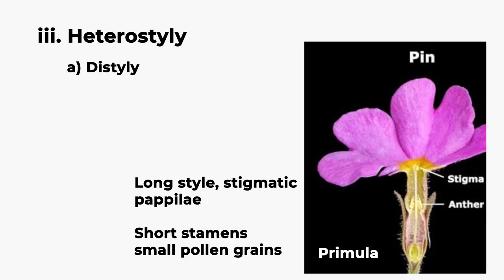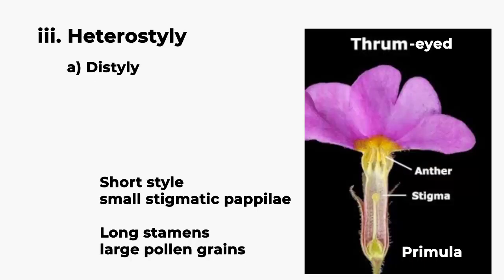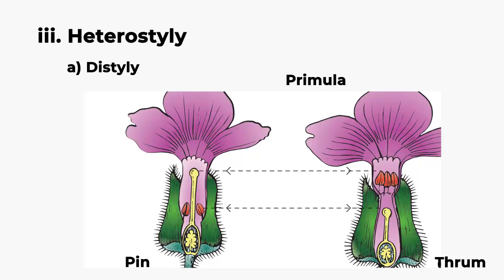One form is pin or long style — with long stigmatic papillae, short stamens, and small pollen grains. Another form is thrumite or short style — with small stigmatic papillae, long stamens, and large pollen grains. In these flowers, the stigma of the thrumite flower and the anther of the pin flower lie at the same level.